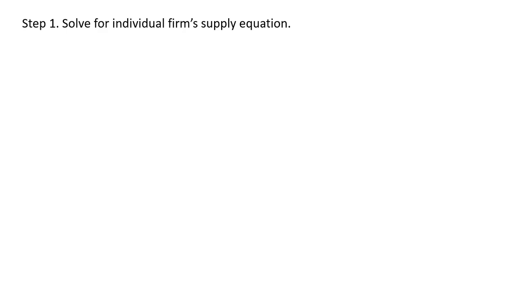So first thing we're going to do is solve for the firm's supply equation, the individual firm's supply equation. We're going to start with the individual firm's production function here, and we're going to solve this for L, units of labor. So dividing through by 10, then squaring both sides, we have this expression.